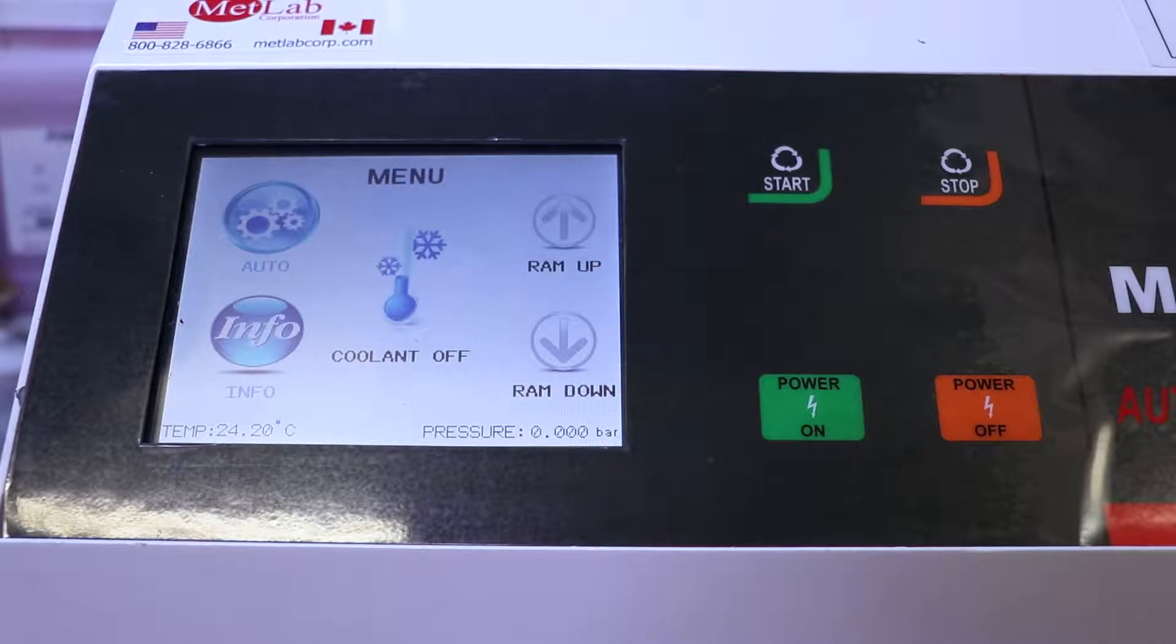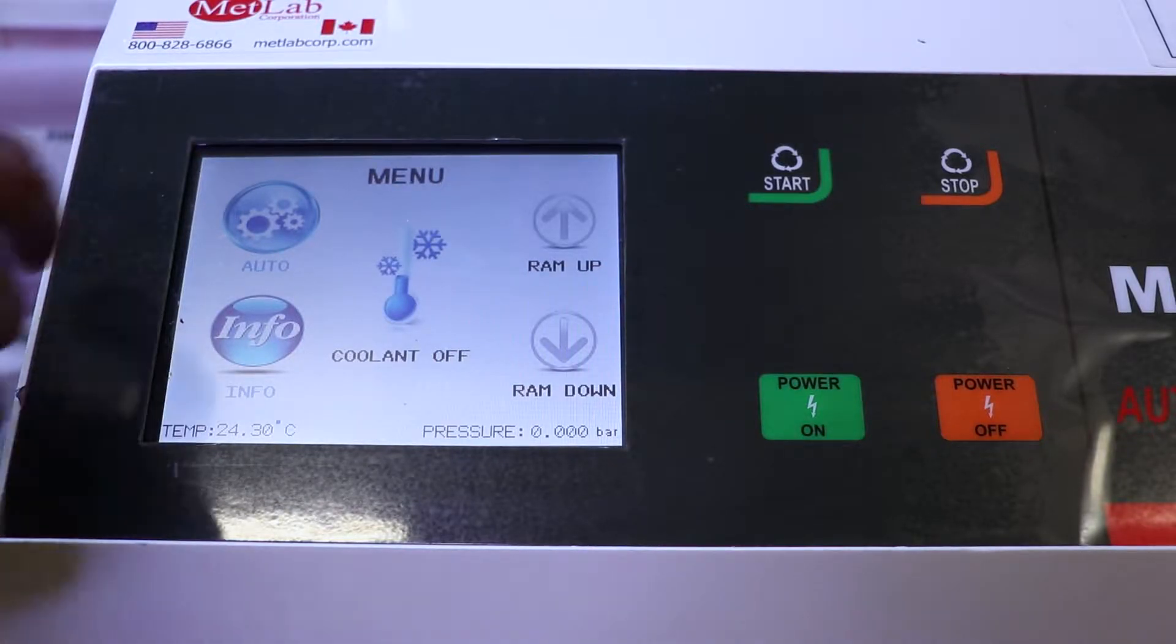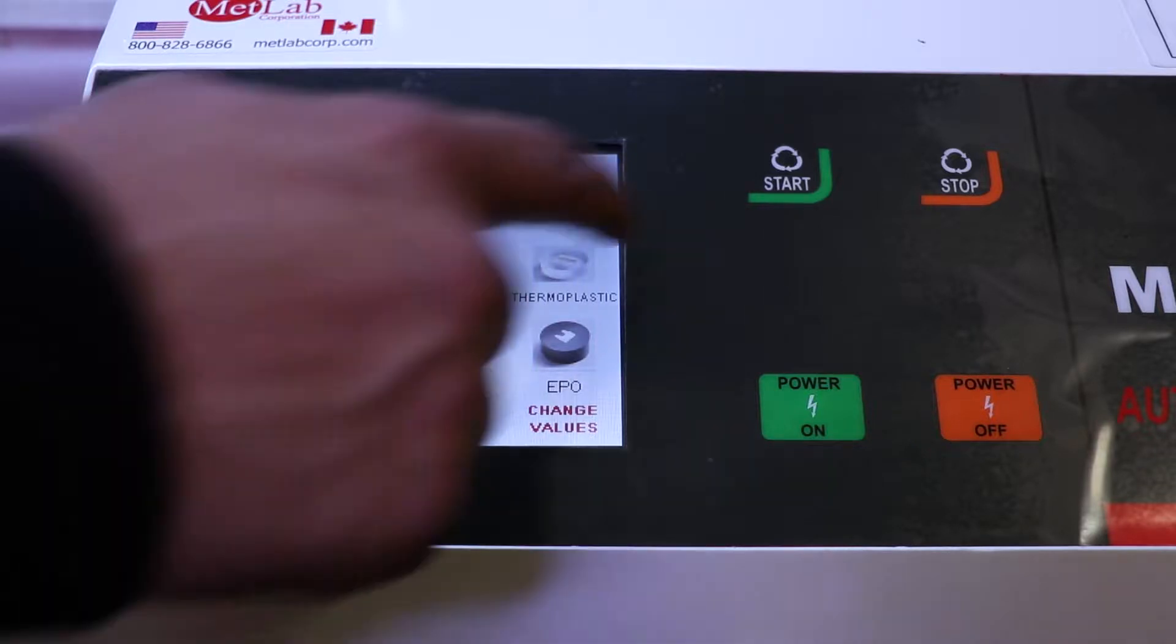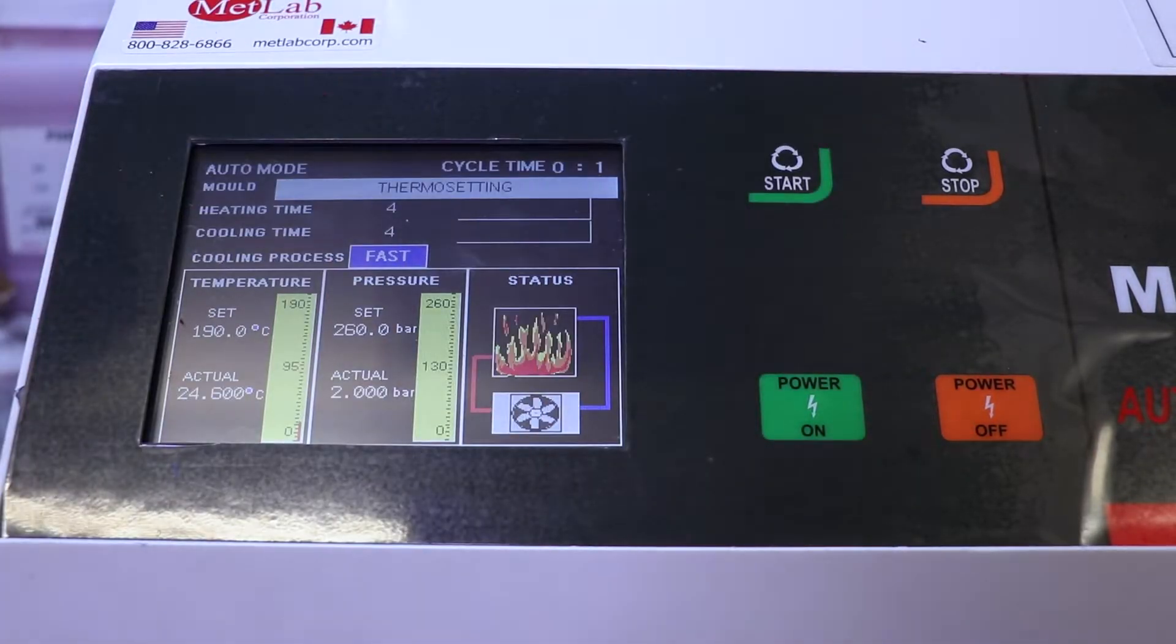Once you've got the lock down, you want to click on auto to just double check that all of your parameters are correct. And then you can click the start button and that will start the hot pressing process.